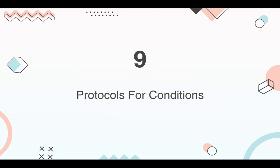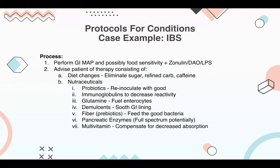Let's go over a protocol for a common condition seen in functional medicine practice: irritable bowel syndrome. Your patient may come to you with IBS-type symptoms including constipation, diarrhea, and more. You might start by performing a GI Map to understand what is going on in the digestive tract, possibly along with a food sensitivity test and other markers like zonulin, a LPS test — all available through Rupa Health. Next, you may advise some therapy including diet changes such as eliminating sugar, refined carbohydrates, and caffeine. Finally, you might prescribe nutraceuticals including probiotics, immunoglobulins, glutamine, demulcents, prebiotics or fiber, pancreatic enzymes, and multivitamins.